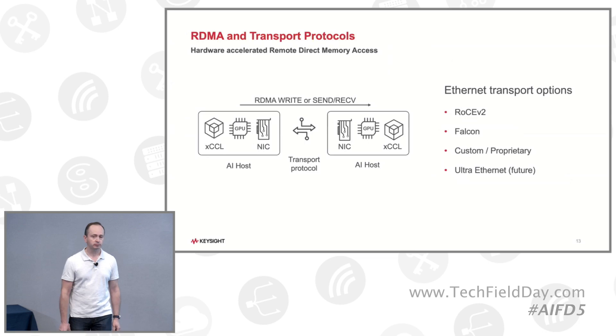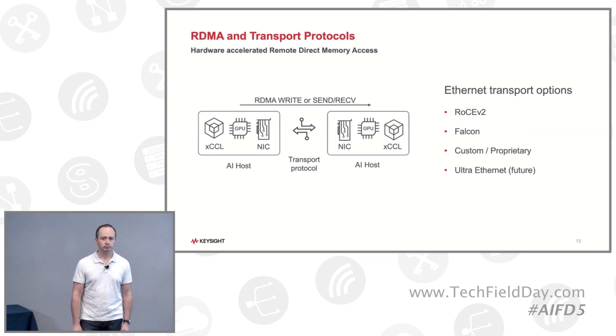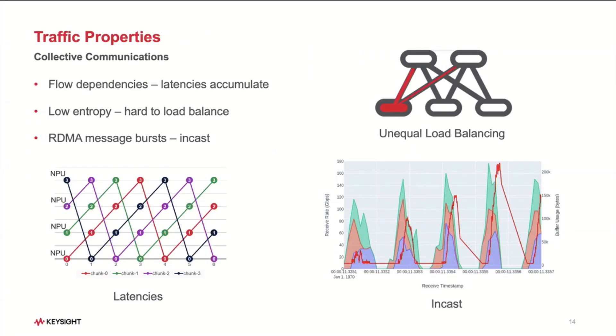When talking about NICs for this purpose, you can call them smart NICs or DPUs — at the end of the day, all they need to do is support the RDMA protocol. When it comes to the network, these streams of data have three key properties that make it difficult to get good performance from how they're being moved across the network.